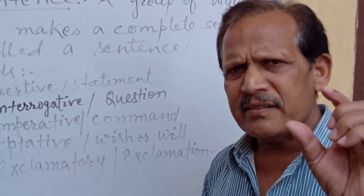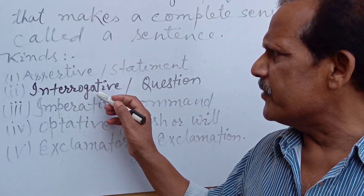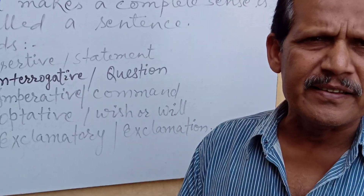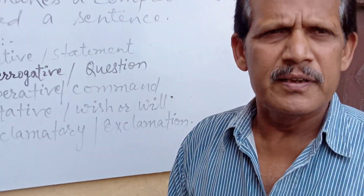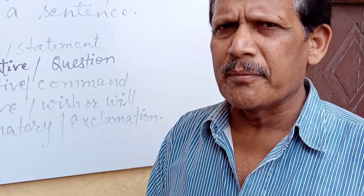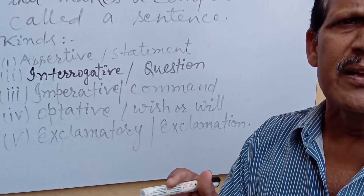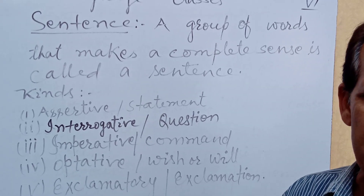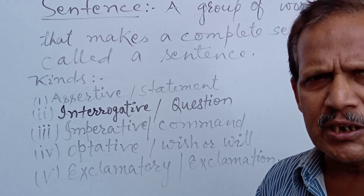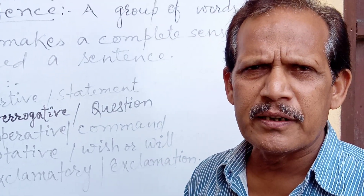Interrogative sentences are of two types: simple interrogative and double interrogative. A simple interrogative sentence begins with a verb — for example: 'Are you ready?', 'Is he ready?', 'Are they going to school?', 'Can you do this?' — sentences beginning with is, am, are, was, were, can, could, etc. are simple interrogative sentences.